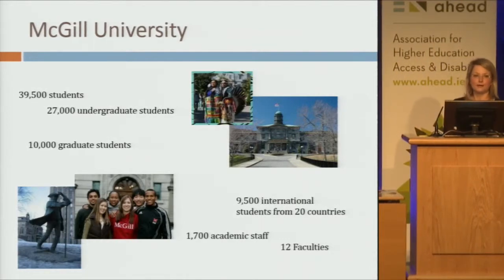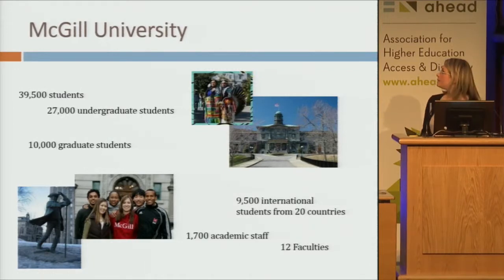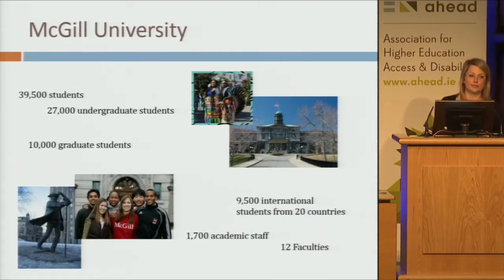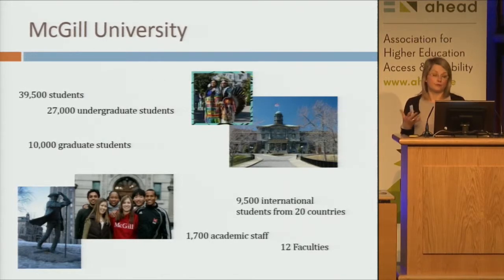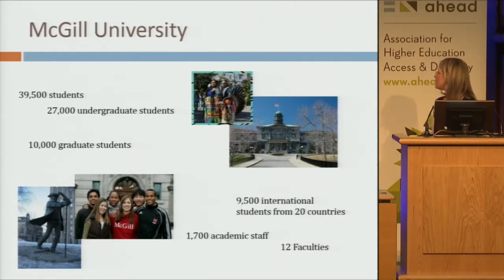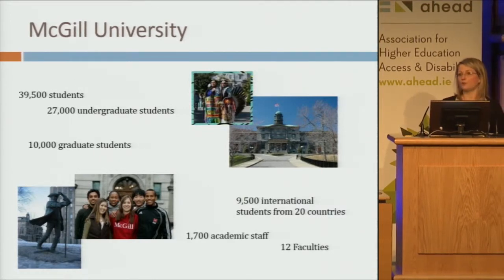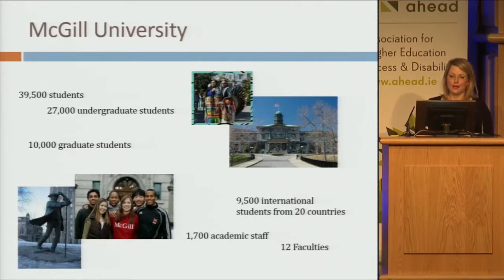McGill University is located in Quebec, Montreal. At large, we have 39,500 students — 27,000 undergraduate students and 10,000 graduate students — and a large number of international students: 9,500. When we talk about diversity and Universal Design for Learning at McGill, we do not only talk about students with disabilities, but also students from different cultural backgrounds. Montreal is a bilingual city, so we have a lot of English second language speakers as well, and students with French as their first language who experience barriers similar to those experienced by students with disabilities. Our international students come from 120 countries. We have around 1,700 academic staff.